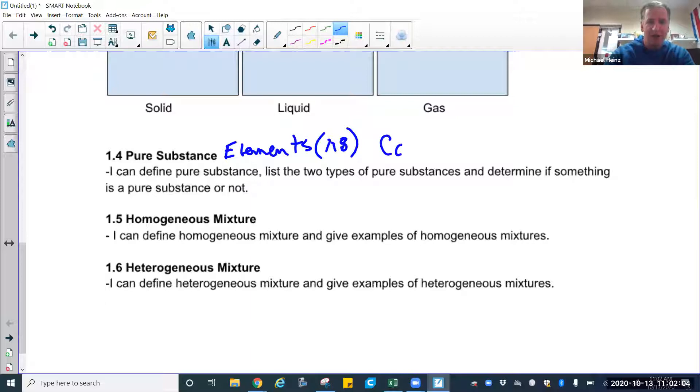Compounds can also be pure. Like, for example, a compound water - you can have pure water. Salt. Pure salt. Even though it's made up of two different elements, if I had a beaker of salt, the only thing in that beaker would be salt. Sugar, C12H22O11, would be pure substances. So elements and compounds can be pure substances.